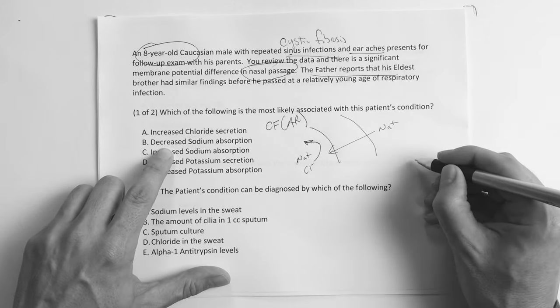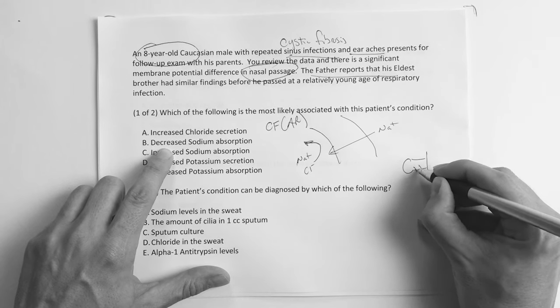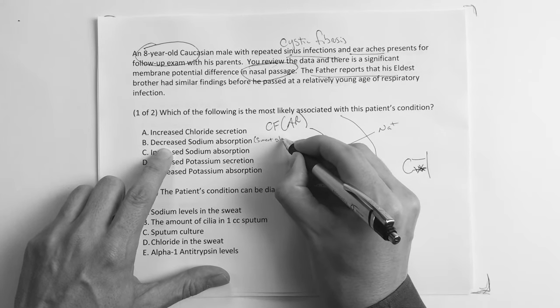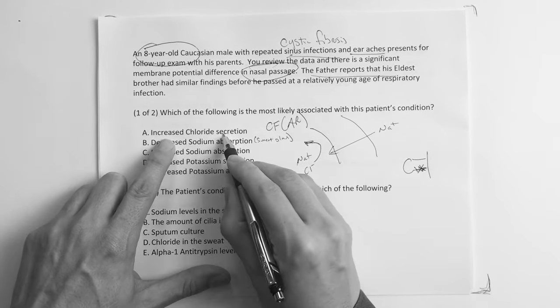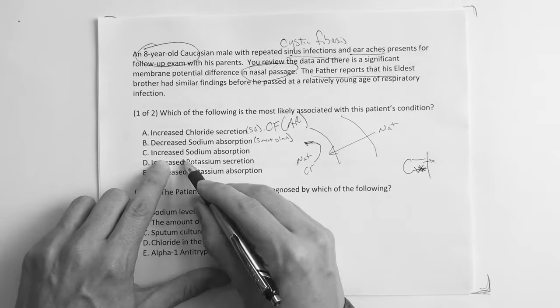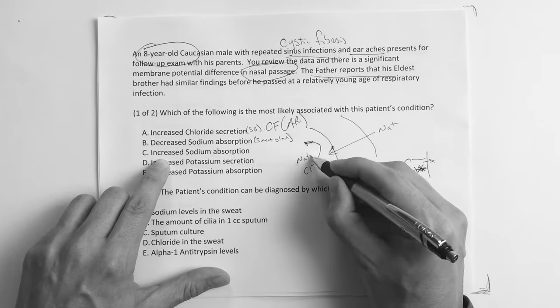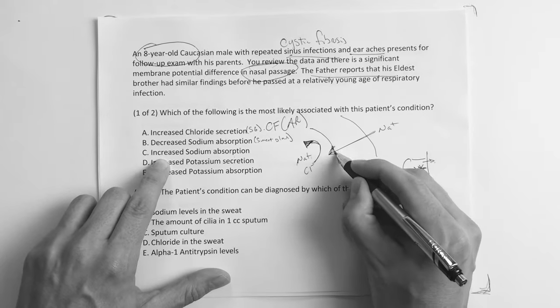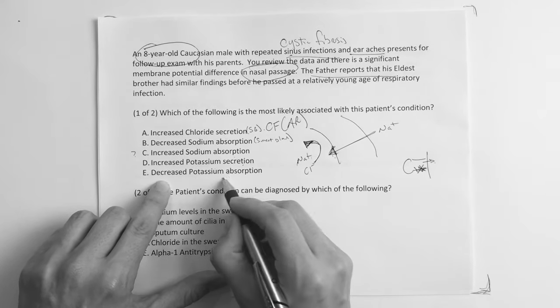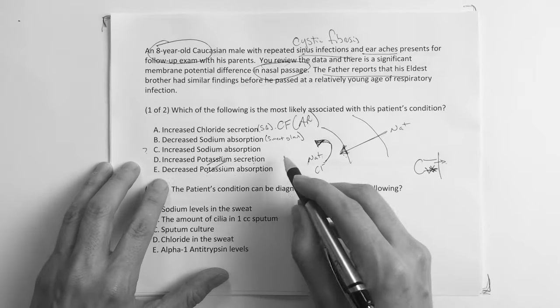Decreased sodium absorption? Well again, that almost sounds like we're almost talking about the sweat gland, right? Because usually sodium gets reabsorbed here but that doesn't happen. So that would be more of a sweat gland kind of scenario. Increased sodium secretion? Chloride secretion? Yeah that seems more of a sweat gland as well. Increased sodium absorption? Okay, well if it doesn't go out here and then sodium gets reabsorbed back in, okay well that's a potential.